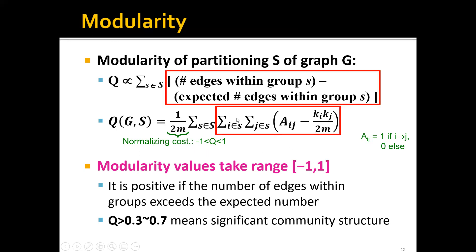The modularity values range between minus 1 and 1. It is positive if the number of edges within the group exceeds the expected number, meaning the group is more densely connected than expected. Normally, when Q is larger than roughly 0.3 to 0.7, that indicates a significant community structure.